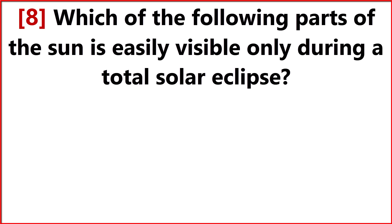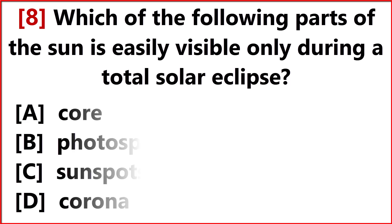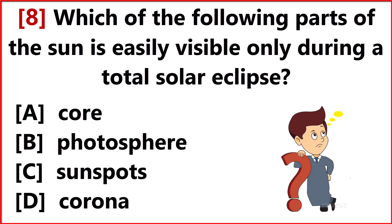Which of the following parts of the sun is easily visible only during a total solar eclipse? Option D. Corona.